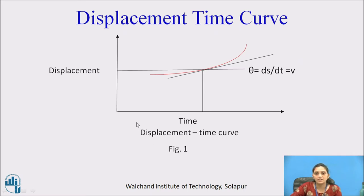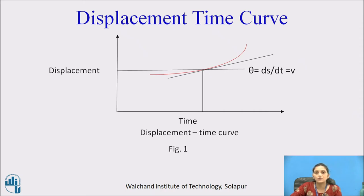Let us see the displacement-time curve. Take displacement on the y-axis and time on the x-axis. The red color line is the displacement-time curve. Draw a tangent at any point; the slope of the tangent is theta, where theta equals ds by dt, which is velocity. So the slope of the displacement-time curve gives velocity.